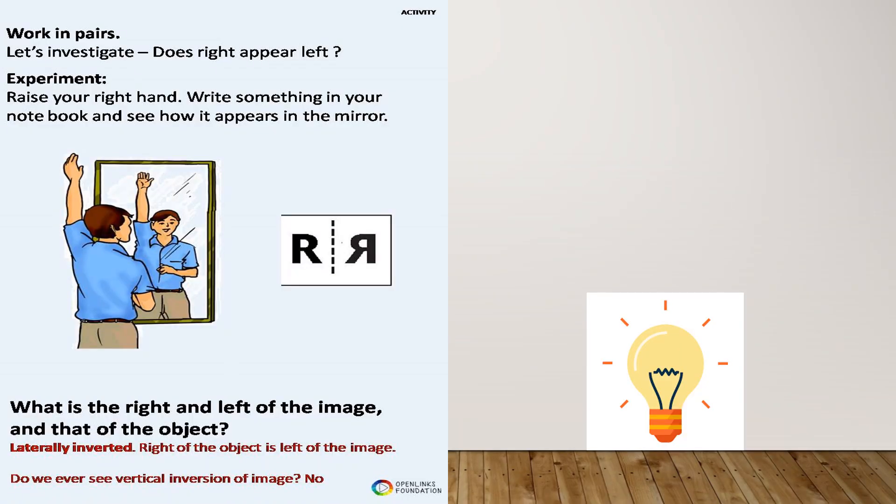Now observe this picture. A person is standing before a mirror. When he raises his left hand, the image in the mirror shows the right hand being lifted. Similarly, if you want to show the letter 'R' in a mirror, it appears reversed. Left becomes right and right becomes left. This phenomenon is called lateral inversion.